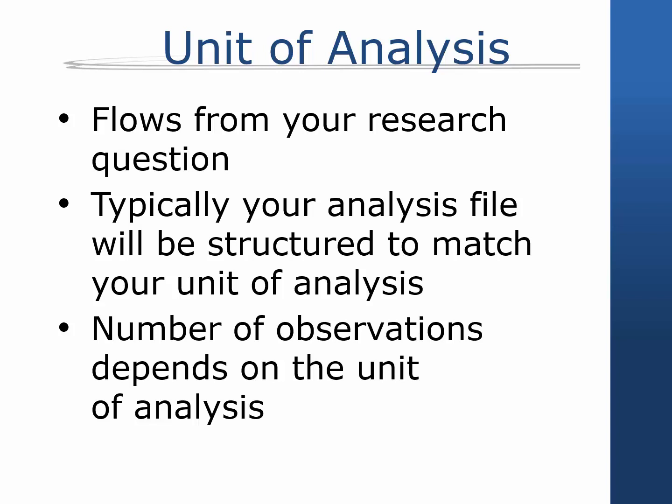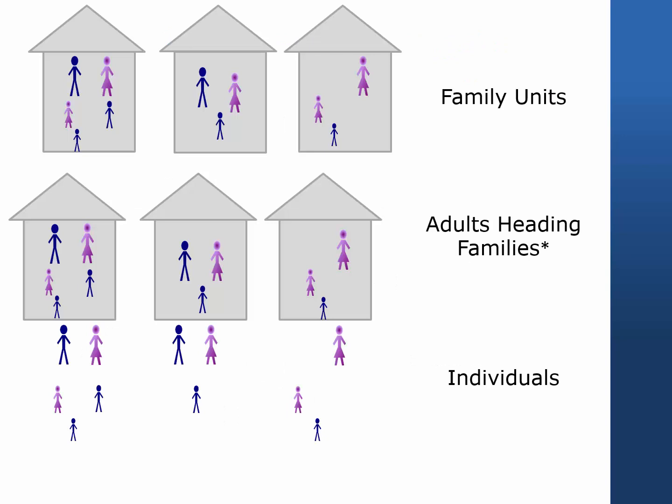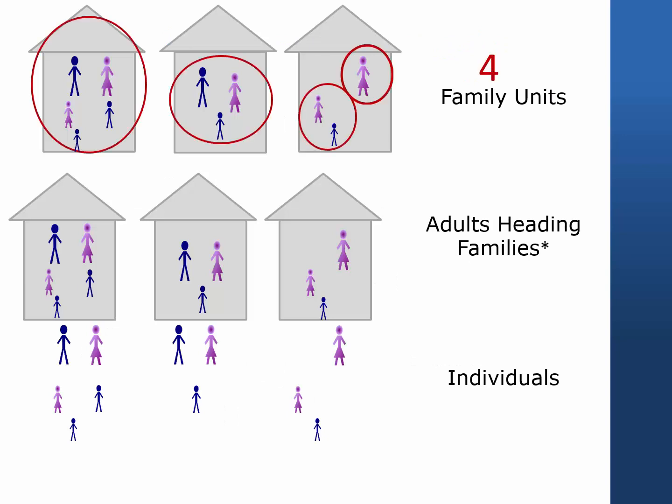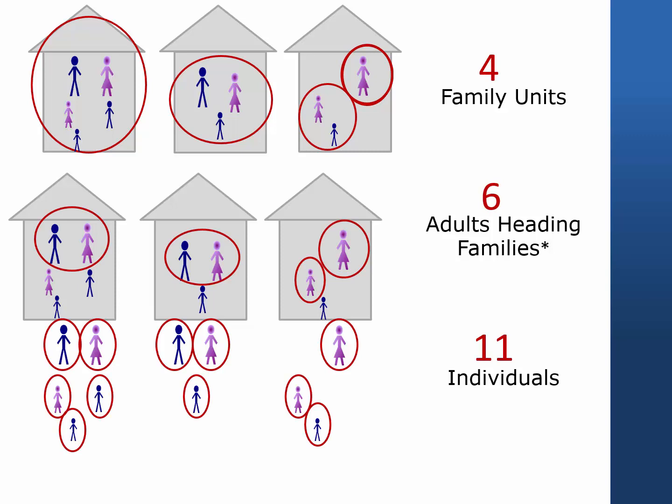Typically, your analysis file will need to be structured to match your unit of analysis, and the number of observations in your file will therefore depend on the unit of analysis. In this example, there are 4 family units, 6 adults heading families, and 11 individuals. Other units of analysis are possible, but not covered in this tutorial.